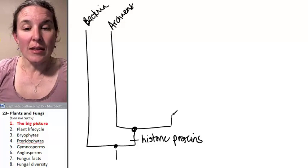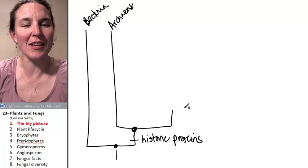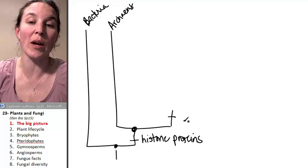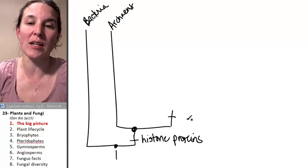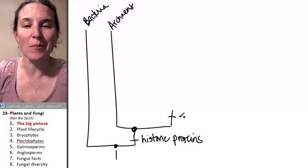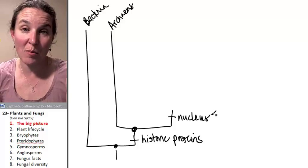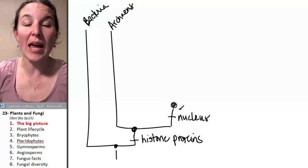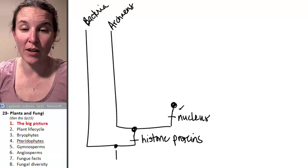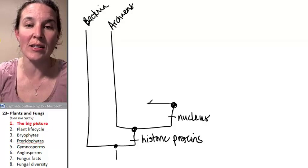Now, the ancestor with the histone proteins, they gave rise to the Archaea, also gave rise to a group of eukaryotes. And everything beyond here is a eukaryote. Let's just make it easy and say everything beyond has a nucleus. Now, the ancestor of all eukaryotes makes sense, is going to branch off and give rise to some other things.